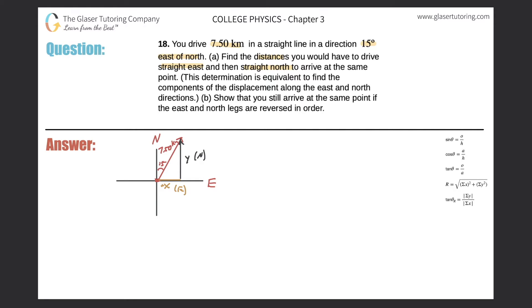The two axes form 90 degrees. If the piece of the angle along one axis is 15 degrees, we figure out the remaining angle by doing 90 minus 15, which works out to be 75 degrees. That looks like a 75-degree angle — perfect.